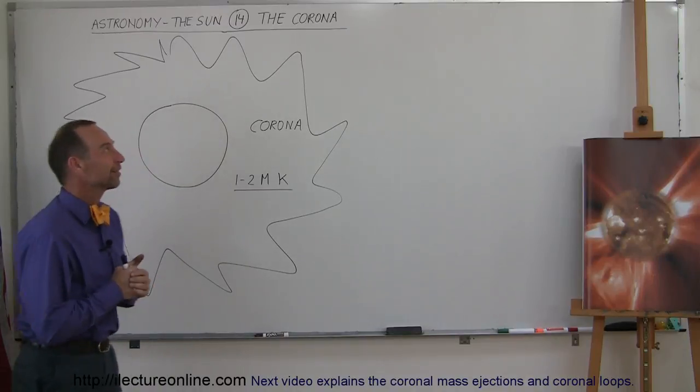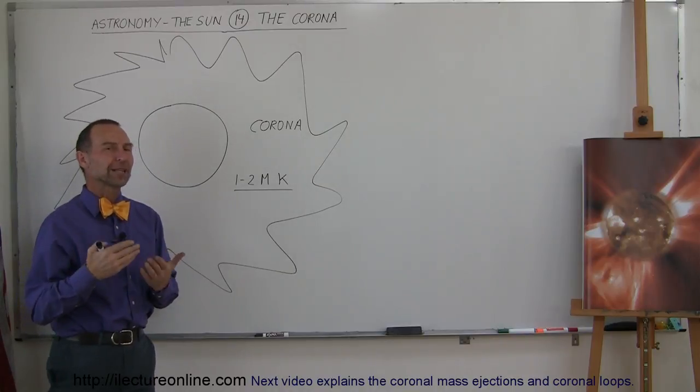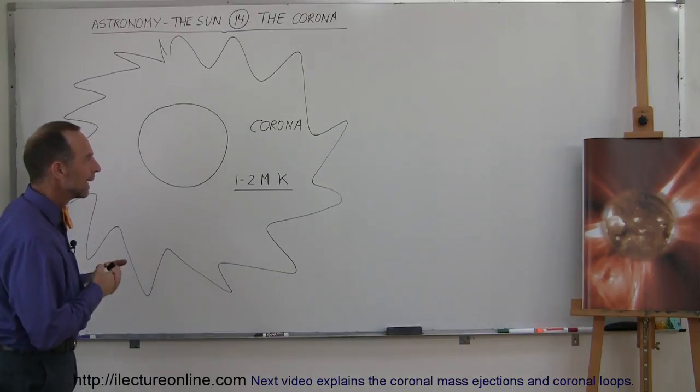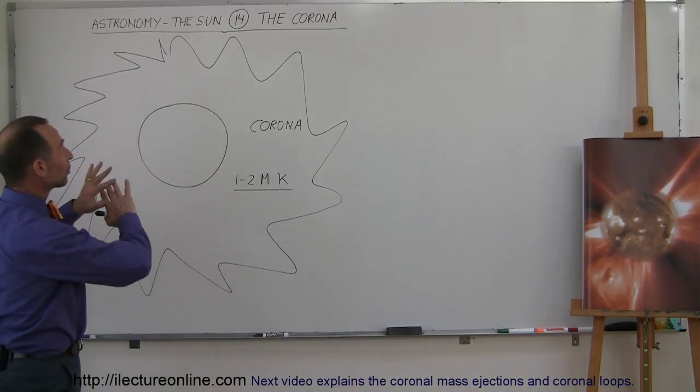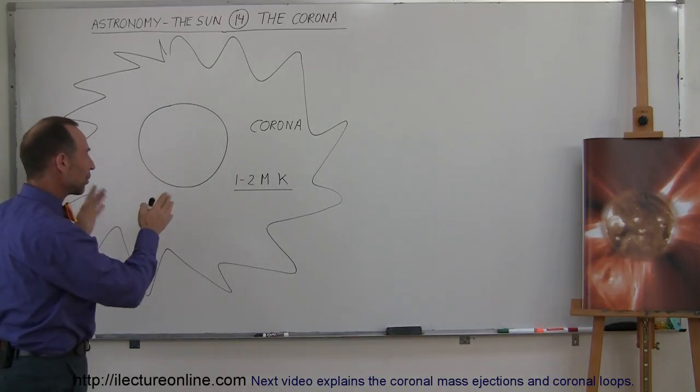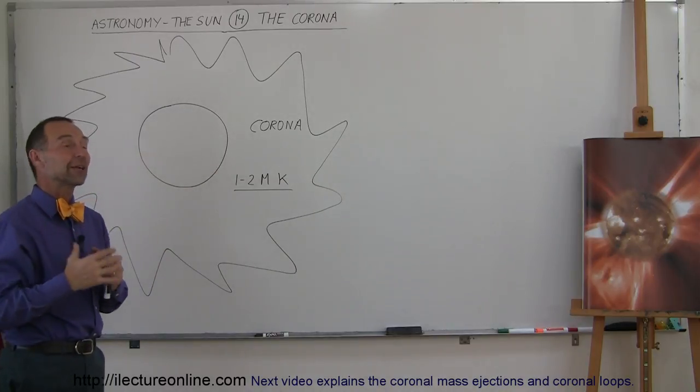Welcome to Lecture Online, and now we're going to talk about the sun's corona. Corona really means crown. It comes from a Latin derivative for crown. Again, normally when you look at the sun, you're not going to see the corona. The sun is way too bright. It overshadows, so to speak, any visible light that we get from the corona.